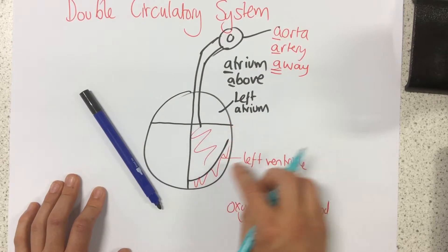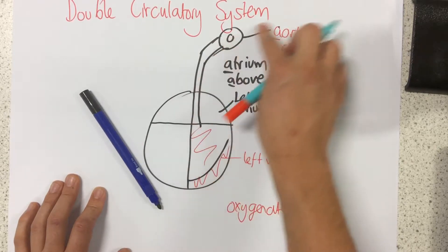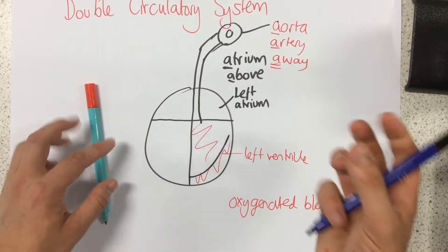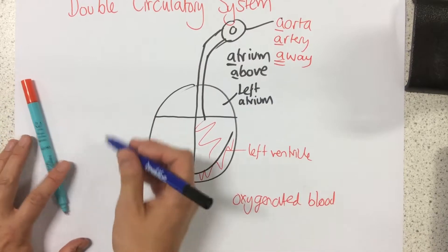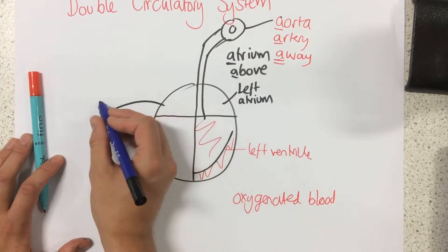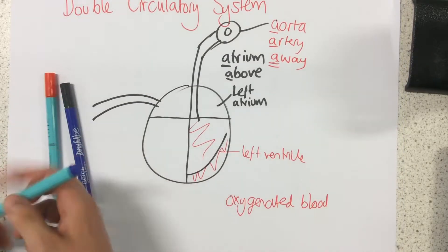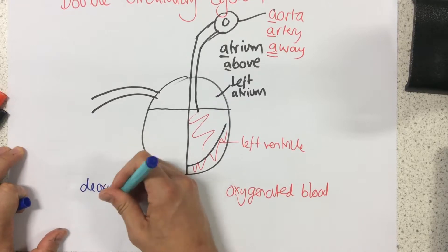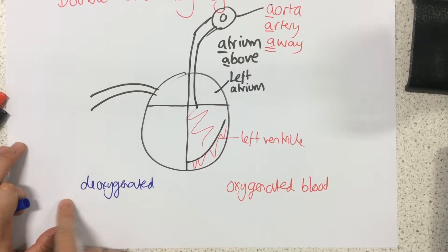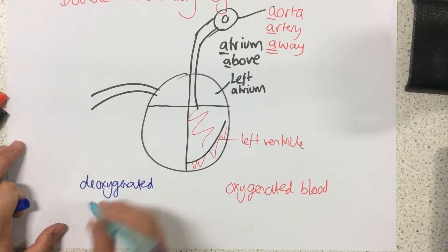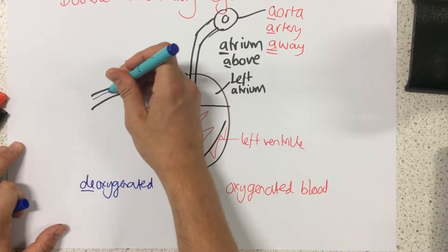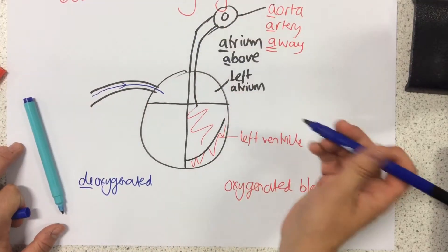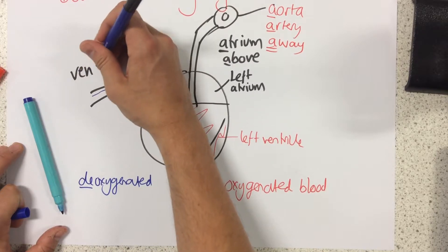This oxygenated blood travels from the left ventricle through the aorta to the rest of the body. In the rest of the body, we use up that oxygen in the cells. When the blood comes back into the heart, it is now deoxygenated — it does not contain oxygen. So this blood now appears blue, and it enters the heart in a vessel called the vena cava.